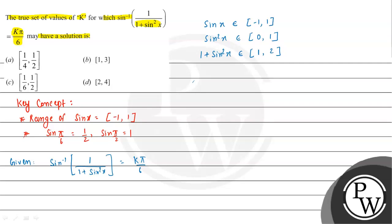Taking the reciprocal, the range of 1 by (1 plus sin squared x) will go from 1/2 to 1. So the expression inside the sin inverse ranges from 1/2 to 1.